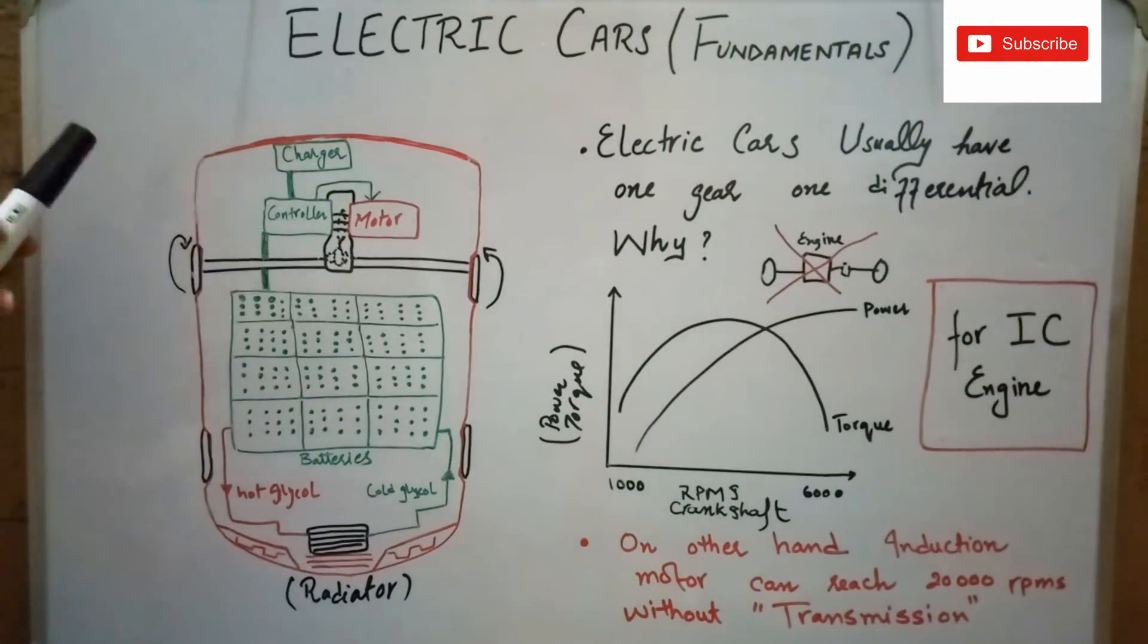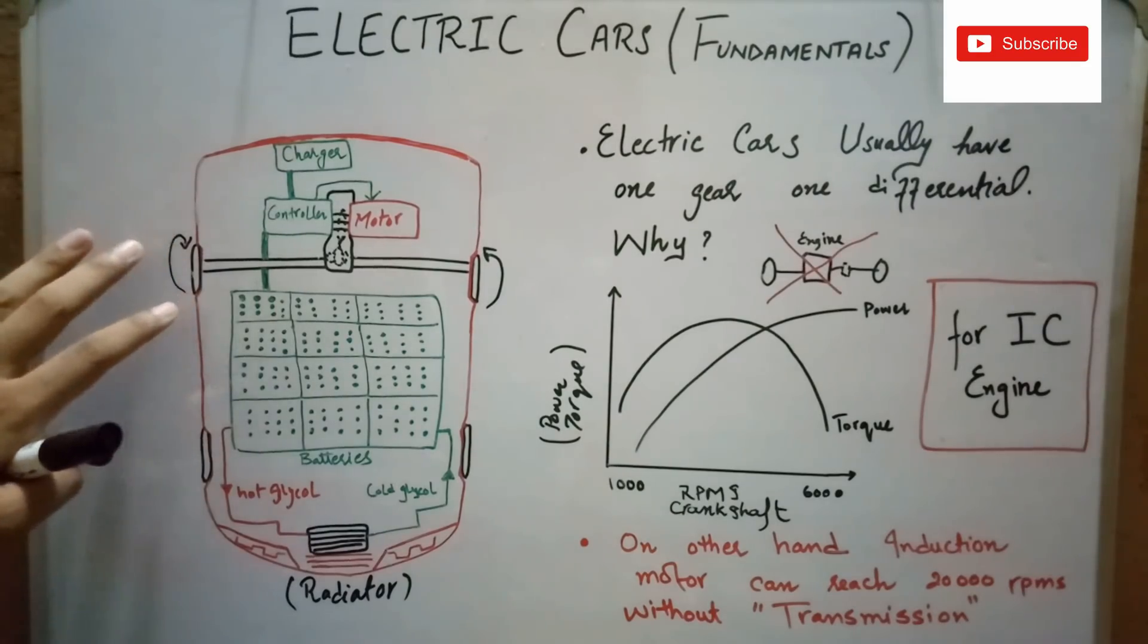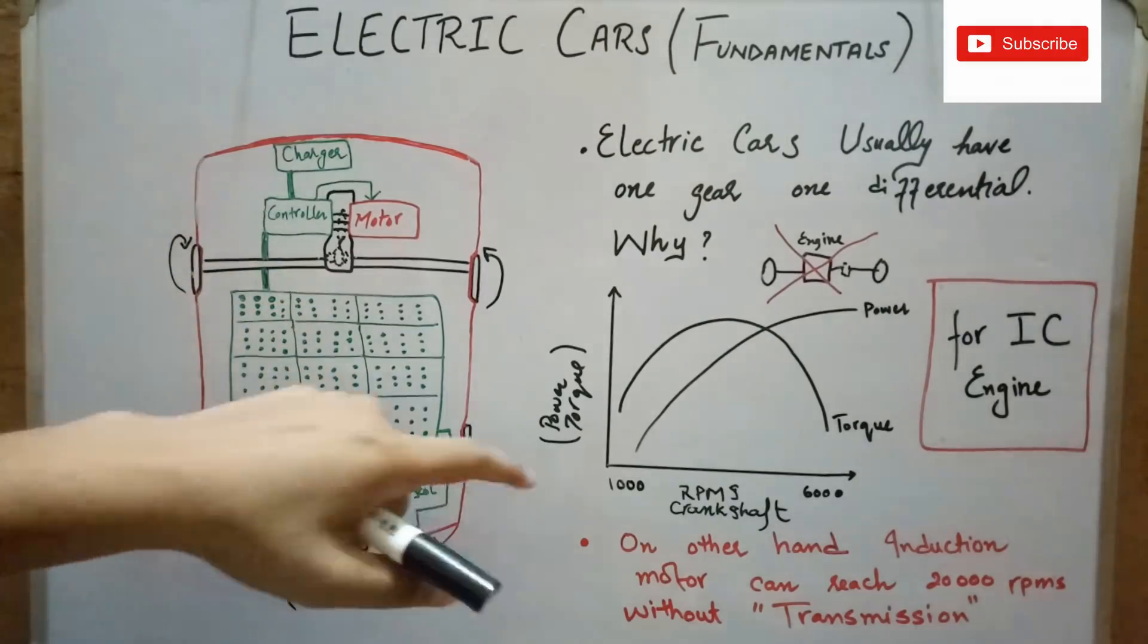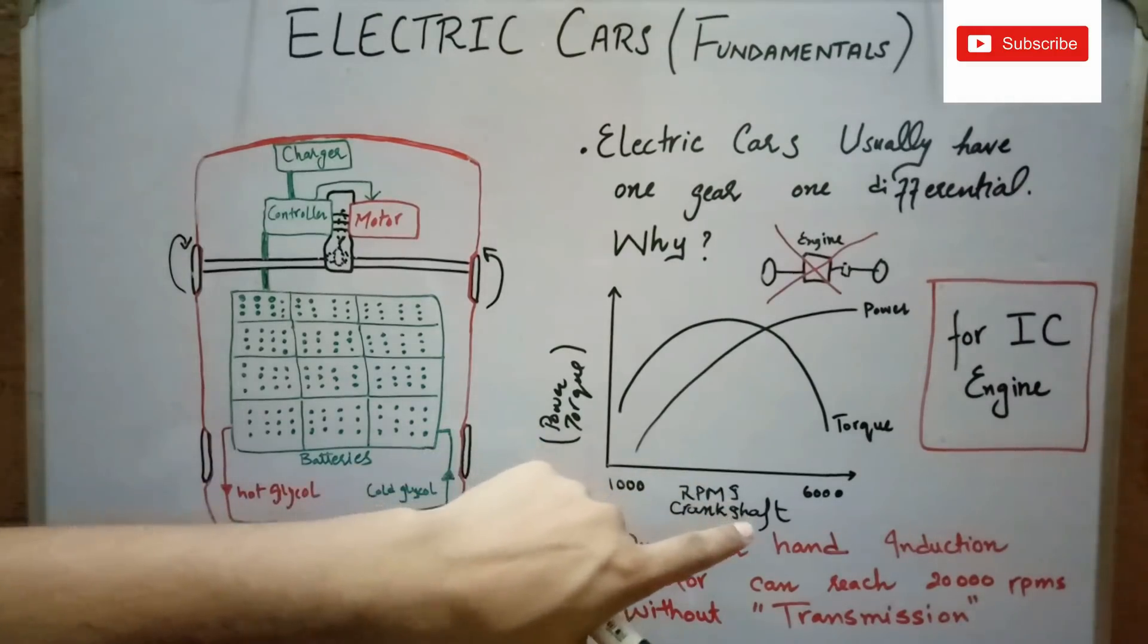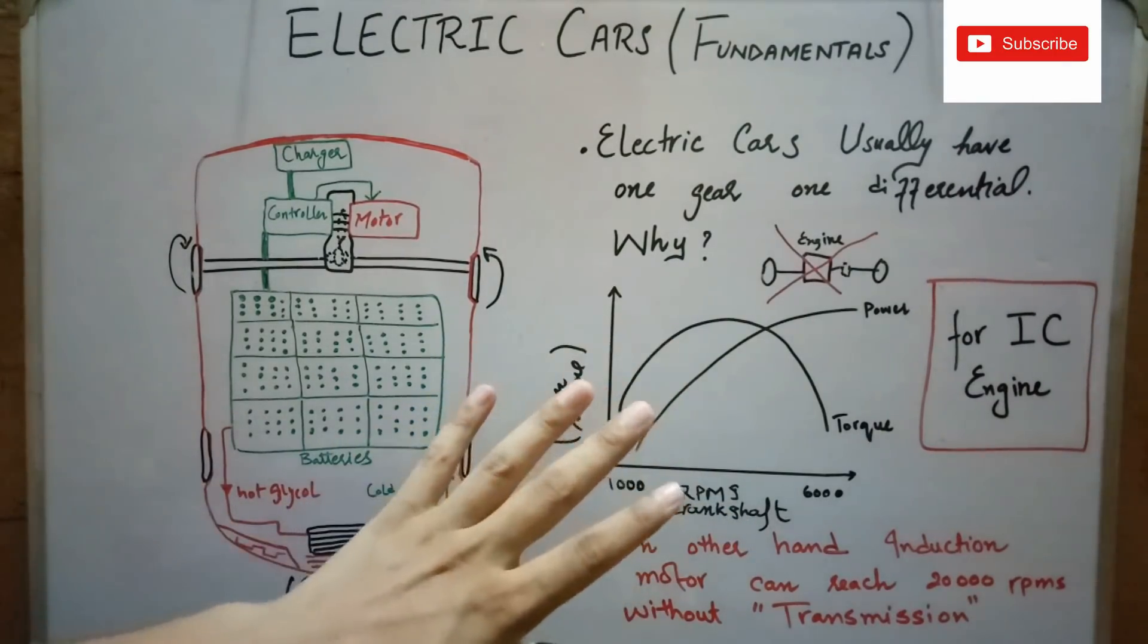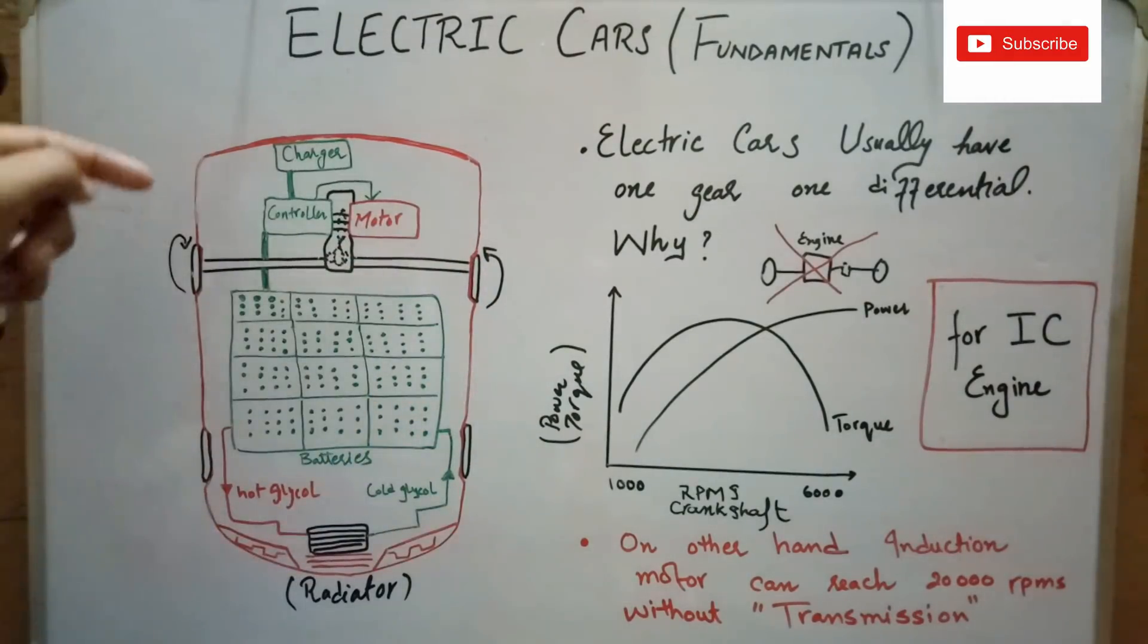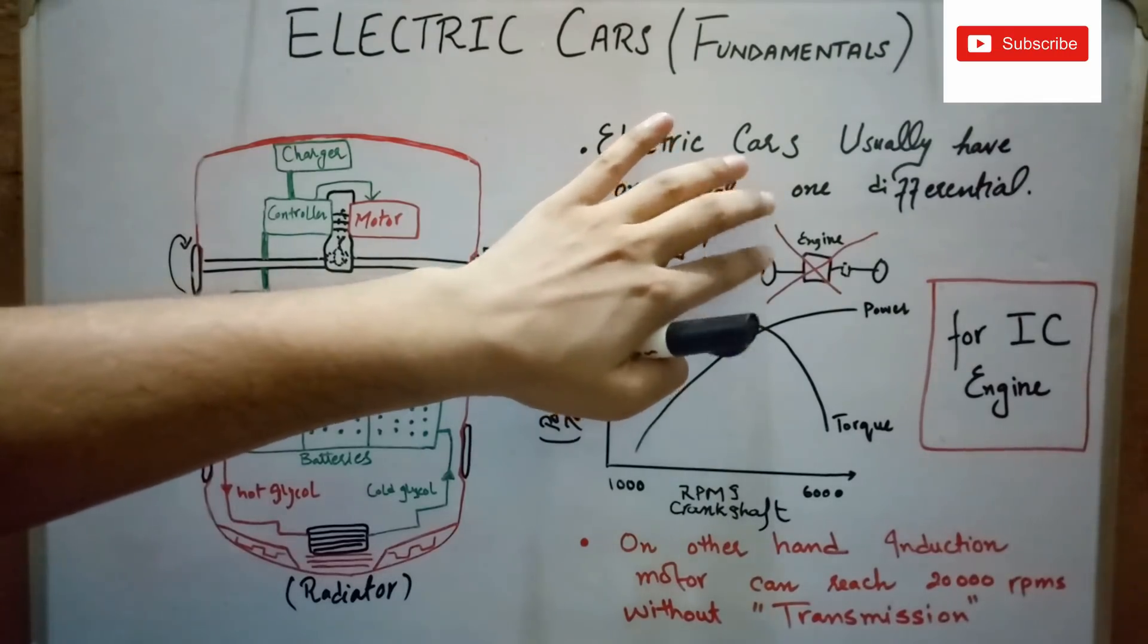So now, if you guys have noticed, electric cars don't have the conventional transmission system unlike gasoline cars. They usually have only one gear and one differential. The reason for this is the RPM range at the crankshaft of the internal combustion engine is very low, and that's why we have to put the transmission system in order to increase the driving wheel speeds in the gasoline cars. It is not the best idea to put the IC engine directly with the driving wheels.